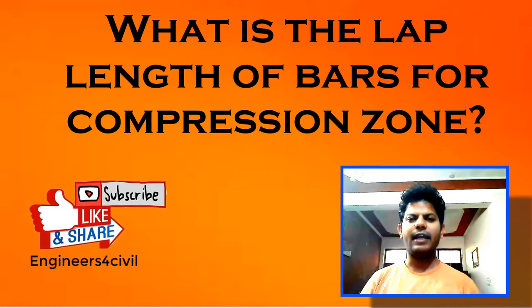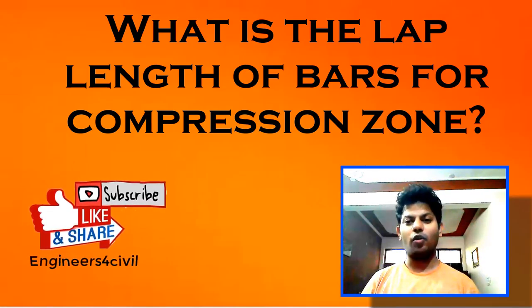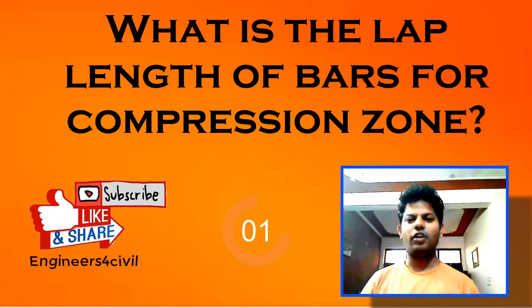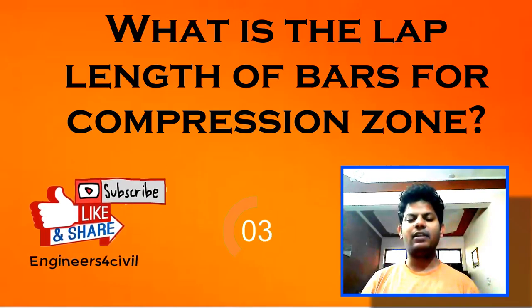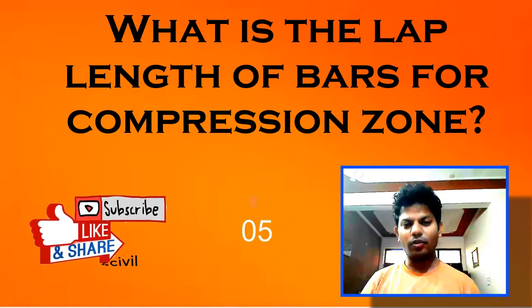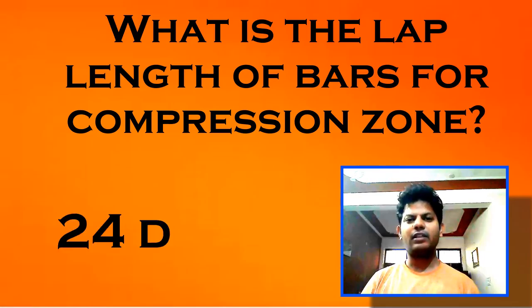What is the lap length of bar for compression zone? When we join two bars, this is the lap length. For compression zone, the lap length is 24d, where d is the diameter of the bar.